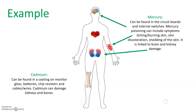The other example I had was mercury. Mercury can be found in circuit boards and internal switches, and it's poisonous — symptoms include burning or itching skin, skin discolouration, shedding of the skin, and it can also be linked to brain and kidney damage. Basically I want you to find as many examples like that as you can and fill up your diagram with different parts of the body highlighted and shown.